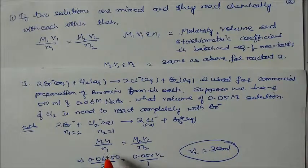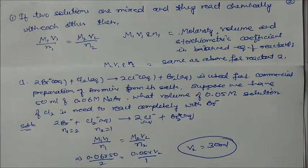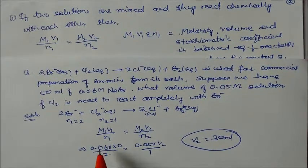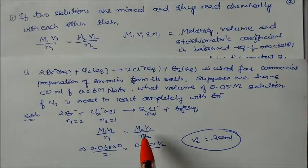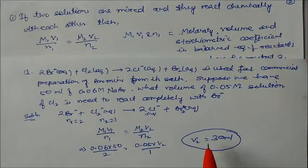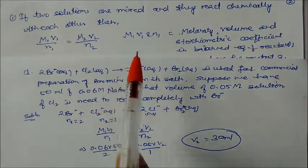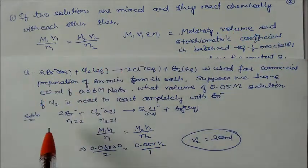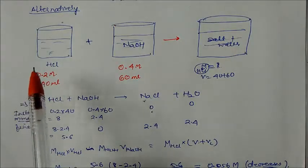Using M1V1/n1 = M2V2/n2: given 50 ml of 0.06 molarity Br⁻ and 0.05 molarity Cl₂, we put in the values: (0.06 × 50) / 2 = (0.05 × V2) / 1, and solving we get V2 = 30 ml. This is how we solve problems where two solutions react chemically with each other.